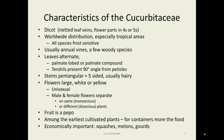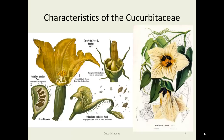The fruit is a pepo. These are among the earliest cultivated plants on record — prehistoric, and more for containers than food initially. Economically important members include squashes, melons, gourds, and similar things.